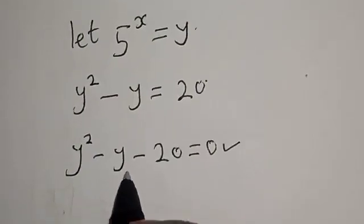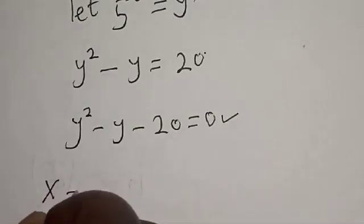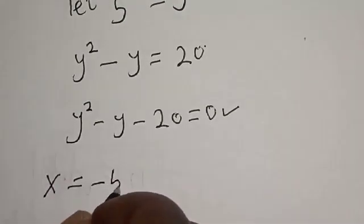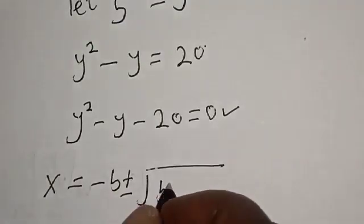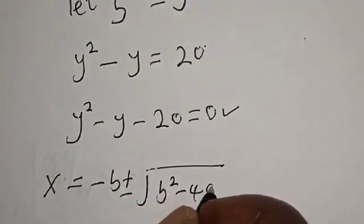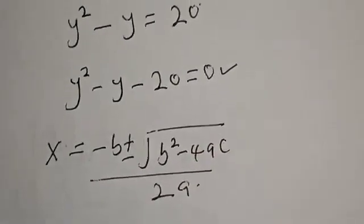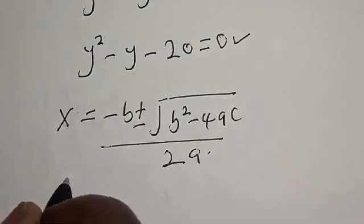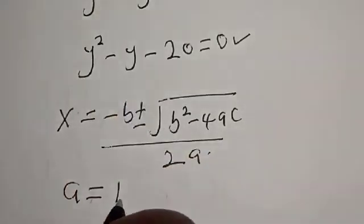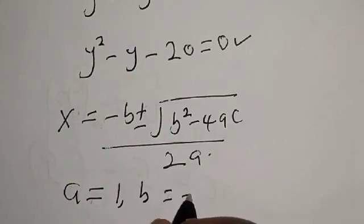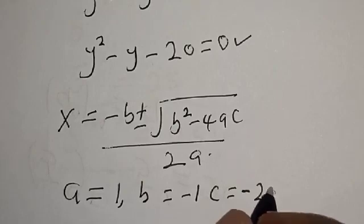This quadratic equation can be solved using the quadratic formula: x equals minus b plus or minus square root of b squared minus 4ac, all over 2a. From our equation, a equals 1, b equals minus 1, and c equals minus 20.